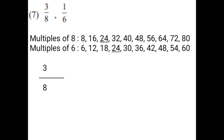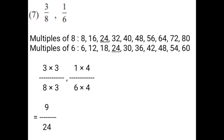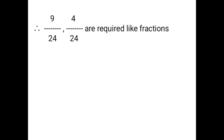3 upon 8 multiplied by 3 on numerator and 3 on denominator. 1 upon 6 multiplied by 4 on numerator and 4 on denominator. That is equal to 3 × 3 = 9 upon 8 × 3 = 24. And 1 × 4 = 4 upon 6 × 4 = 24. Therefore, 9 upon 24 and 4 upon 24 are the required like fractions.